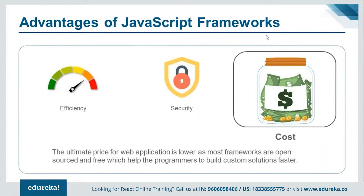The third advantage is cost. Most JavaScript frameworks are open source, meaning developers can start using them without any initial funding. They are available through open source repositories and frequently updated, so individuals can download and use features easily without spending money. From an overall costing perspective, this is a significant advantage for programmers adopting these frameworks for end-to-end implementation.